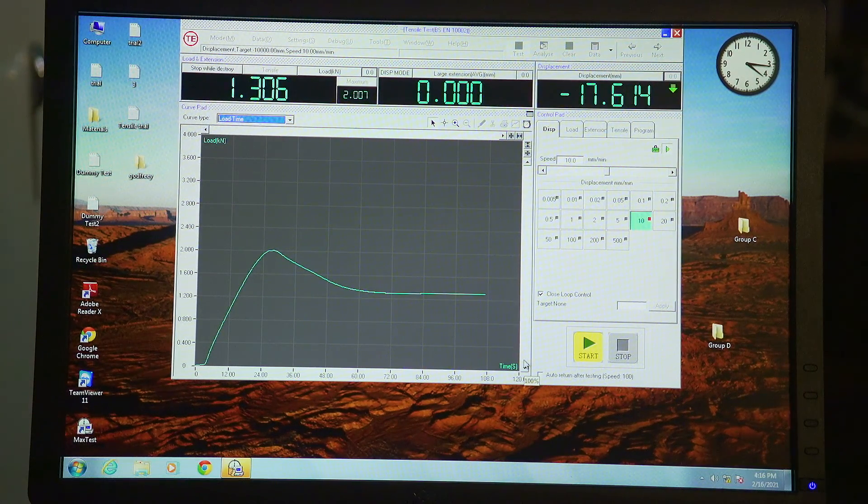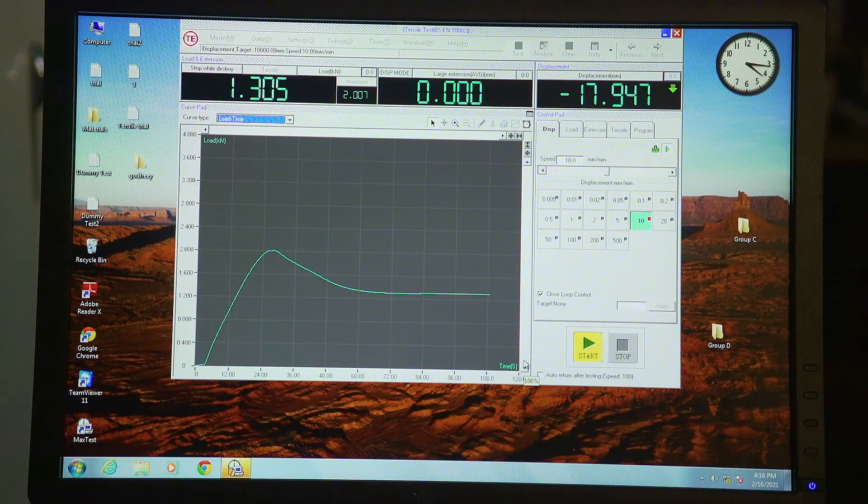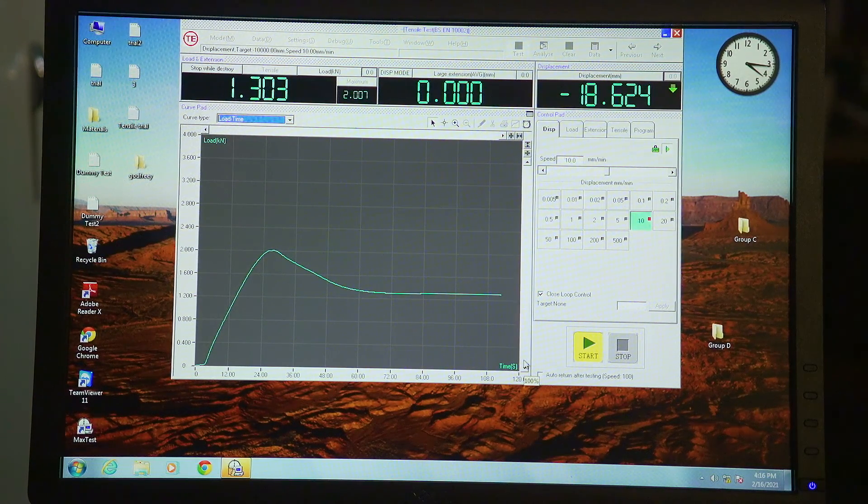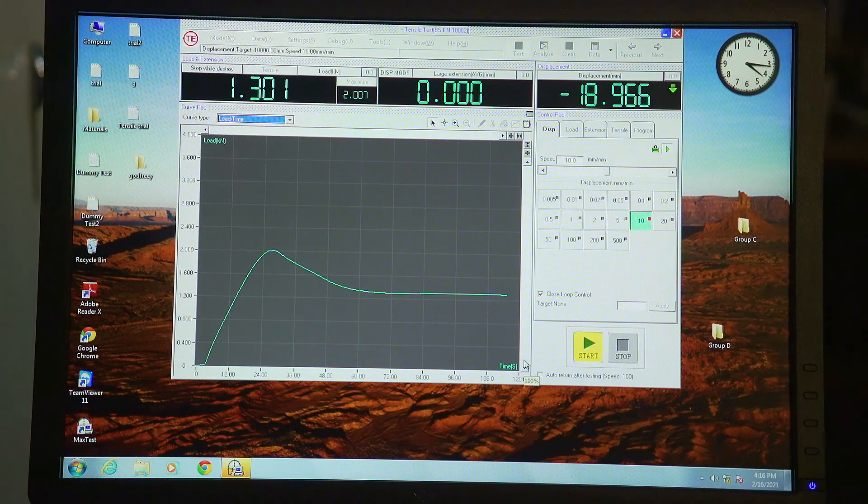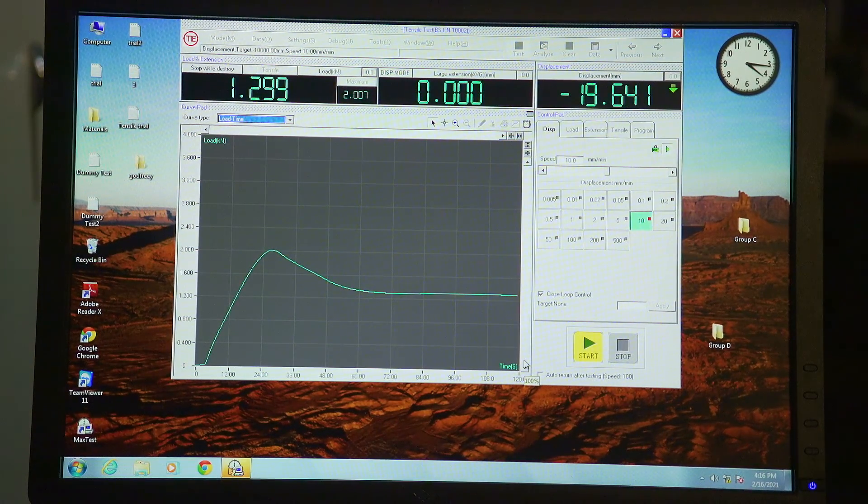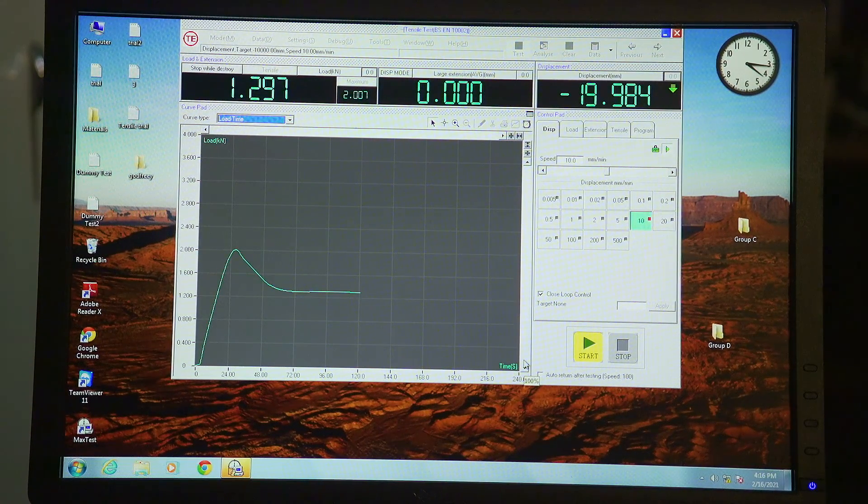And this will continue up until a point where the chains are actually now almost straight, and then you'll see that the load is going to increase again, and eventually then bonds within the polymer will start to fail, and eventually that sample will now fail.